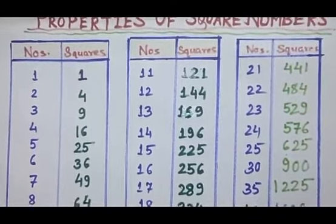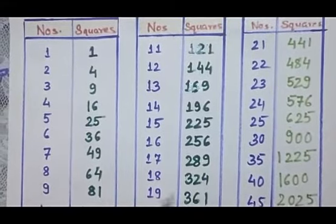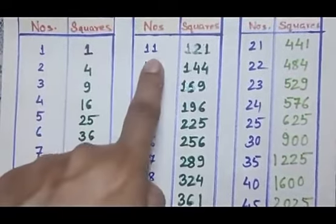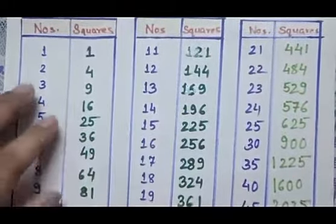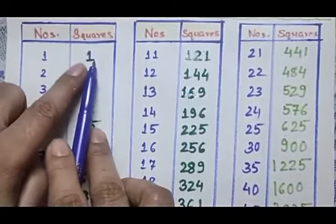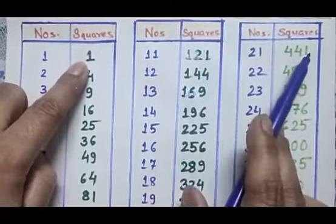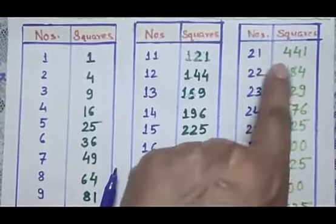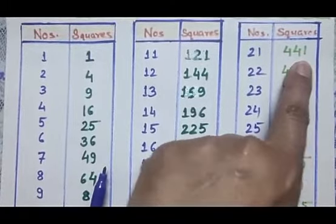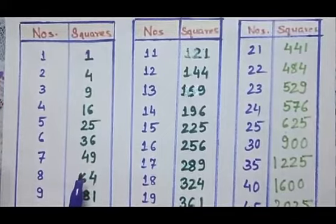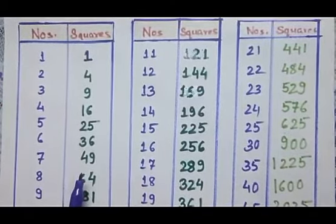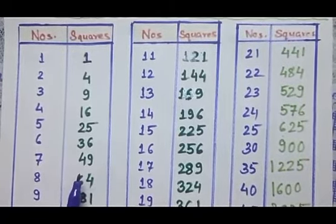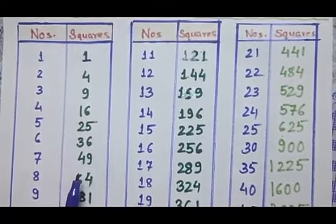When we study these square numbers, we see that if our number ends with 1, just as 1, 11, 21, their square numbers end with 1. Means, 1 square is 1, 11 square is 121, and 21 square is 441. So we can see that if our number has 1 as its unit digit, its square number also will end with 1, means its last digit also will be 1.